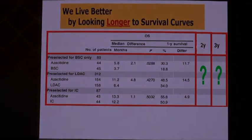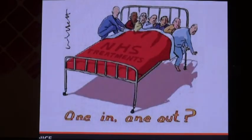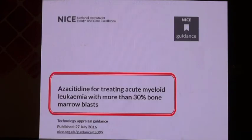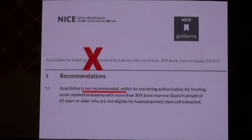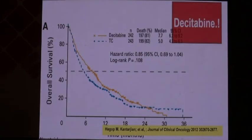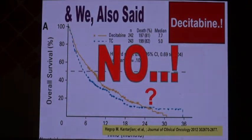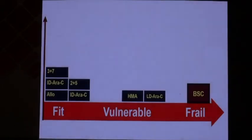At NICE in the UK, they reached the same conclusion, asking why the third and fourth year data were being ignored. The NICE policy conclusion was that including one additional patient under NHS coverage would leave another one outside health coverage — so NICE said no to azacitidine in AML, and we also said no to azacitidine in AML. The same holds true for the similar drug, decitabine — with longer follow-up the two curves superimpose, and we also said no to decitabine at our institutions.